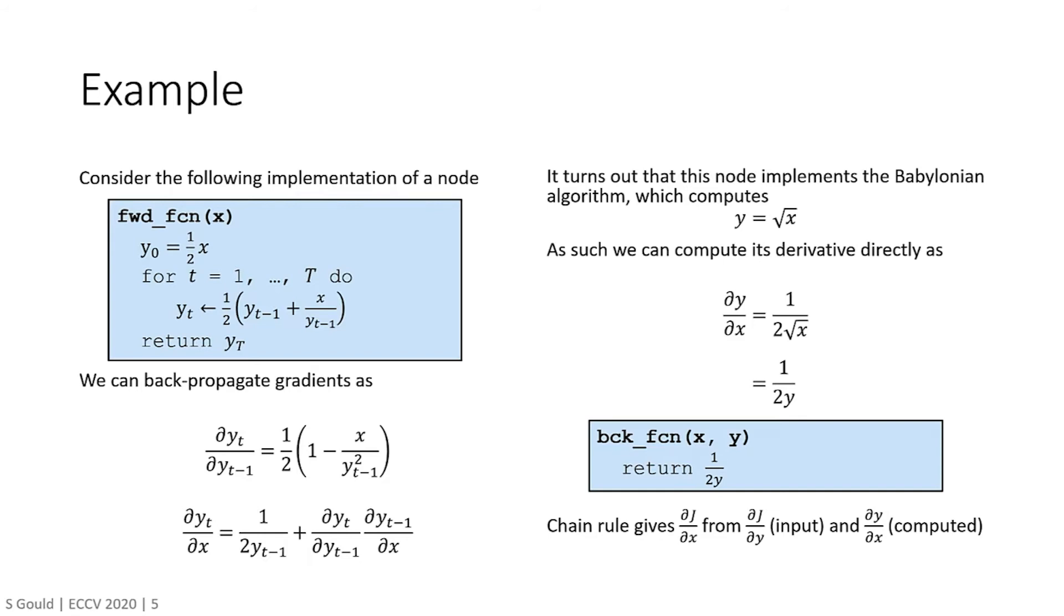Now one way to compute the gradient in the backward pass is to simply unroll the loop in the forward pass and iteratively apply the chain rule. This however is extremely inefficient and numerically unstable given that we can compute the derivative of the square root function analytically. That is, if we know that the function or the Babylonian algorithm computes the square root of x and assigns it to y, then we can just compute dy/dx as 1 over 2 times the square root of x or 1 over 2y.